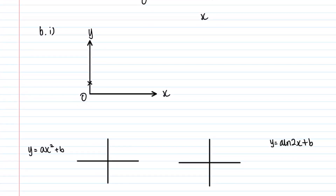Key the values into your graphics calculator and you will get a scatter diagram. There is a point around x equals 0 with y around 70, points rising upward, and the last point at approximately x equals 200, y equals 129. Now compare this shape with the four candidate curves.